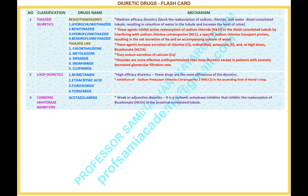Number 3. Name of the classification: carbonic anhydrase inhibitors. Drug name under this classification: acetazolamide. Mechanism of carbonic anhydrase inhibitors — acetazolamide. Weak or adjunctive diuretics. It is a carbonic anhydrase inhibitor that inhibits the reabsorption of bicarbonate in the proximal convoluted tubule.